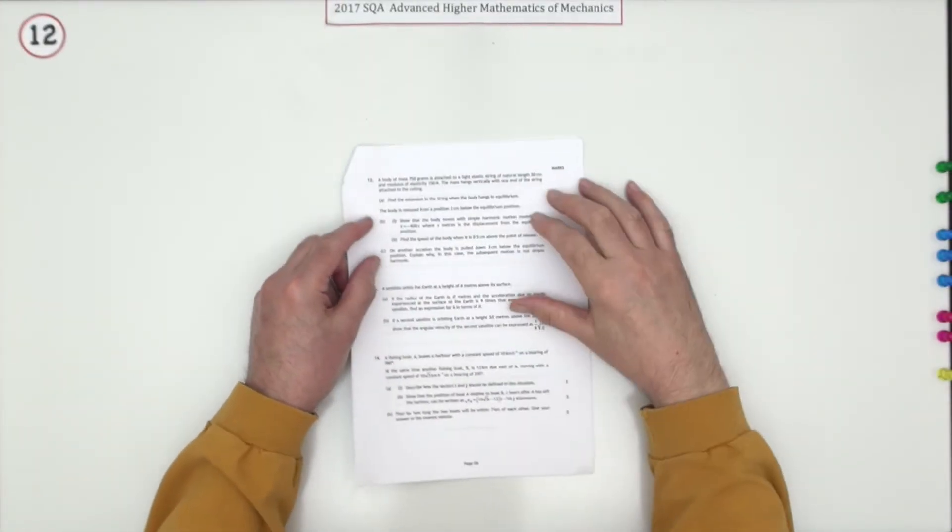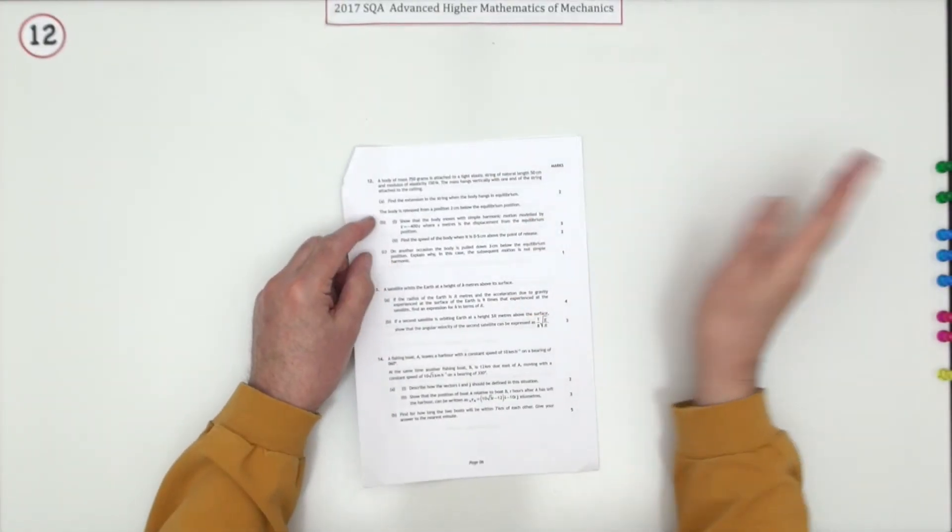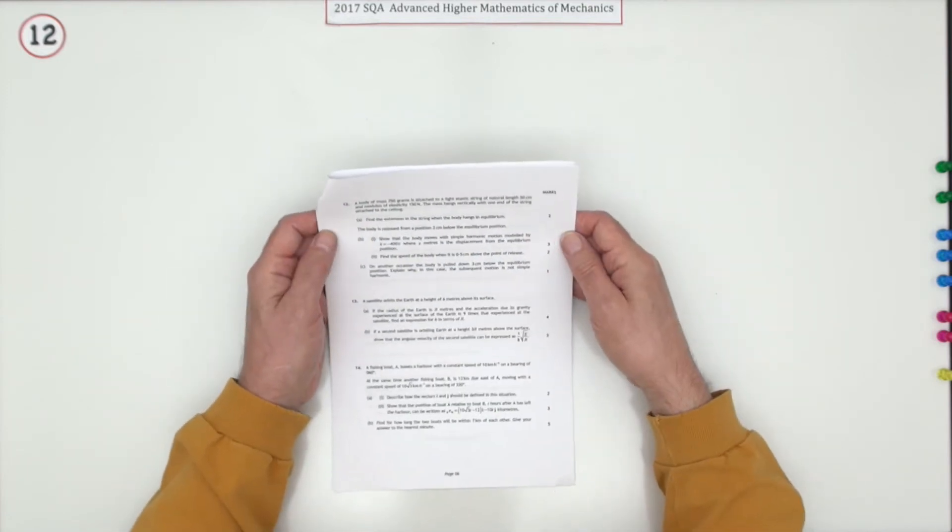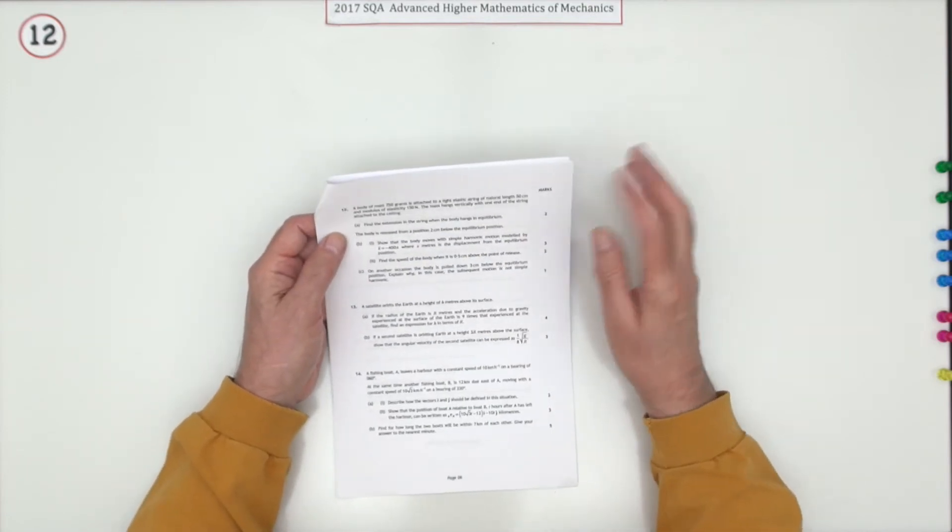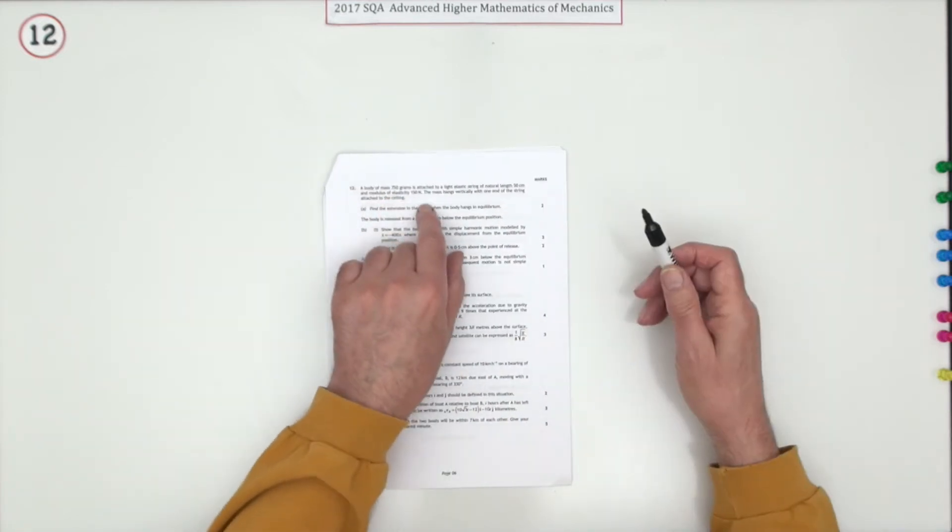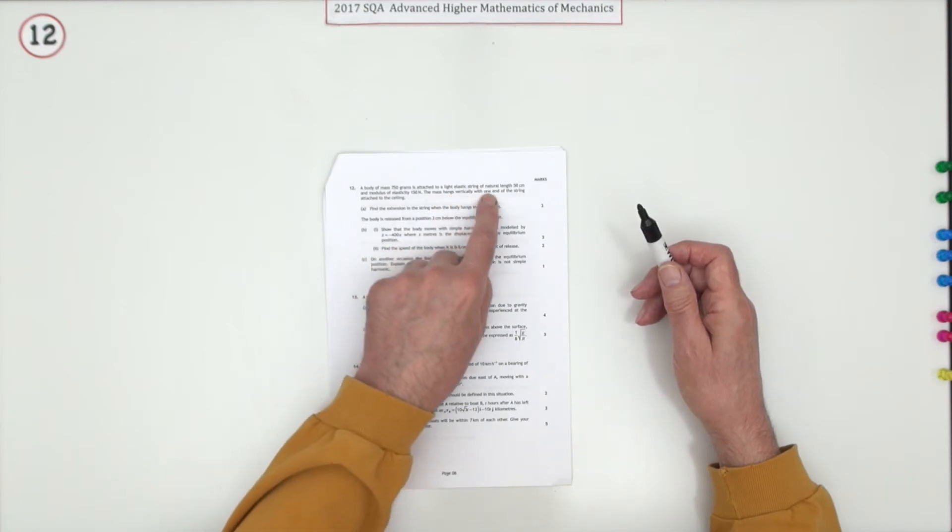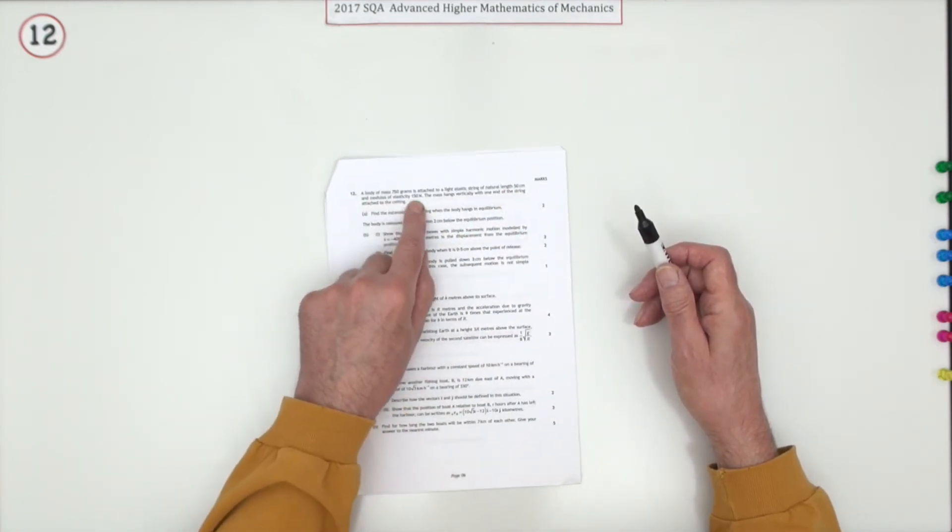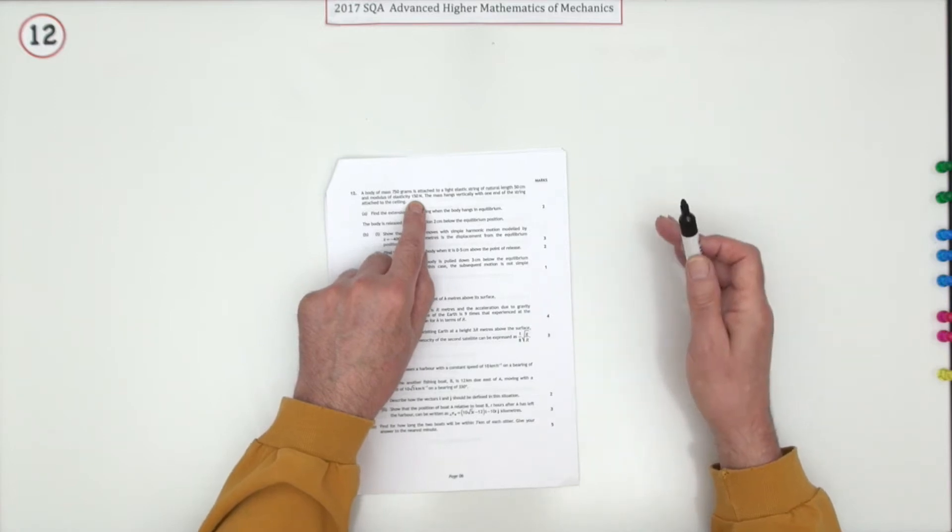Number 12 from the 2017 mathematics of mechanics, up to eight marks this time. This is part of the final six big ones you could say. A body of mass 750 grams is attached to a light elastic string of natural length 50, modulus of elasticity 150 newtons.